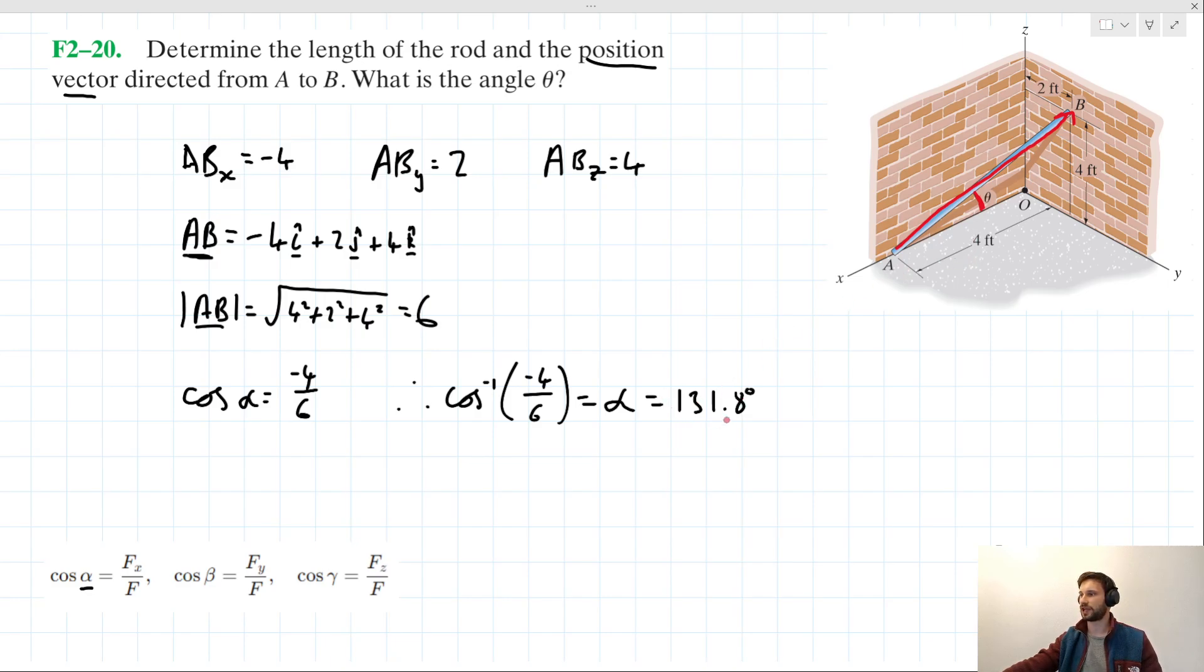What this 131.8 is actually describing is the vector's angle with the positive axis. So what it's really describing is this idea here, this angle here. So how could we solve for theta in this context?